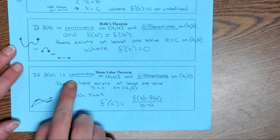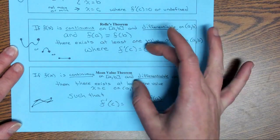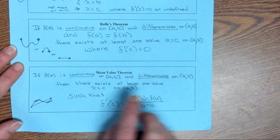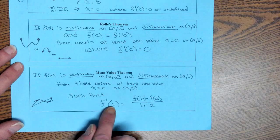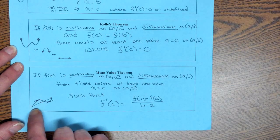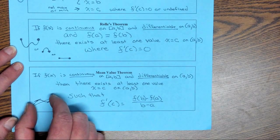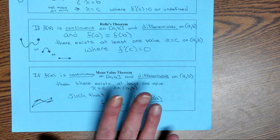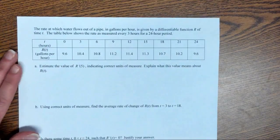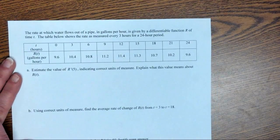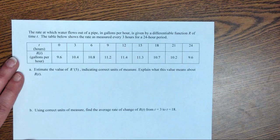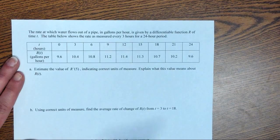Rolle's Theorem says that we're going to have the derivative equal to zero at some point between those two points. Mean Value Theorem is if we are continuous and differentiable, notice these both have to have those conditions. Then the derivative, the slope of the tangent line is going to equal the slope of the secant line between those two points. So our main focus in this section is to apply what we've had.